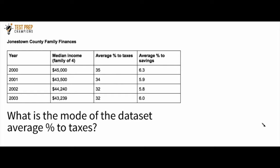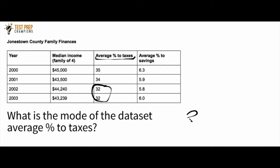What is the mode of the data set average percent to taxes? To find the mode, you look for the most occurring number in the data set. The average percent to taxes data set is: 35, 34, 32, and 32. We see that 32 shows up twice, while 35 and 34 only show up once. So 32 is the most occurring number, and the answer is 32.